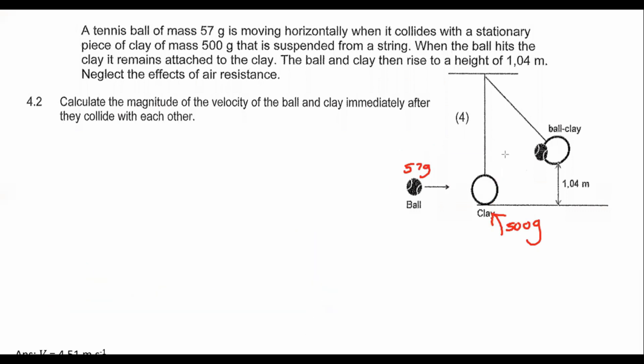So what we do instead is the following: we isolate the question from in this area. We know that when the ball and the clay have connected with each other, they are going to move together and rise to a total height of 1.04 meters. Whenever we talk about calculating velocities on a curved surface, we use the WNC formula.